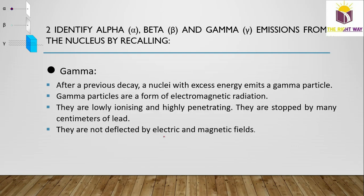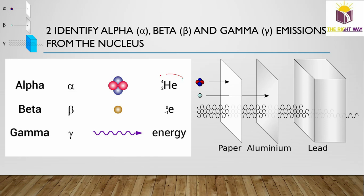After a previous decay, a nucleus with excess energy emits a gamma particle. Gamma radiation is a form of electromagnetic radiation and extra energy from the nucleus. Gamma rays are weakly ionizing — mostly not ionizing at all — and highly penetrating; they can pass through several centimeters of lead. Alpha particles are stopped by paper, beta particles by aluminum, and gamma rays by a few centimeters of lead.